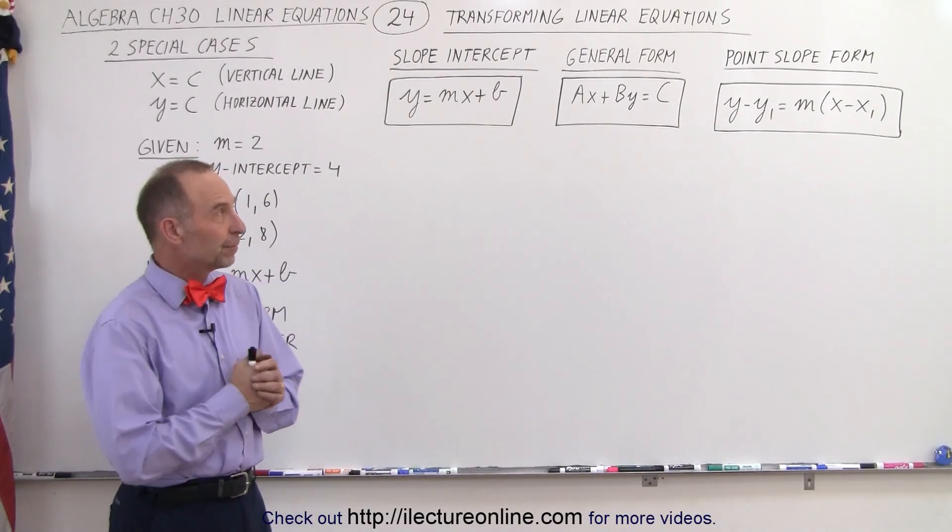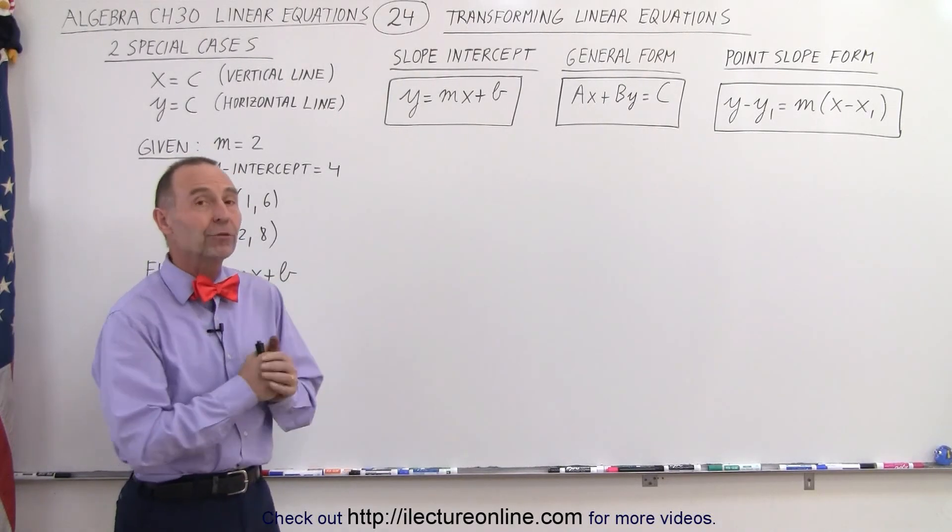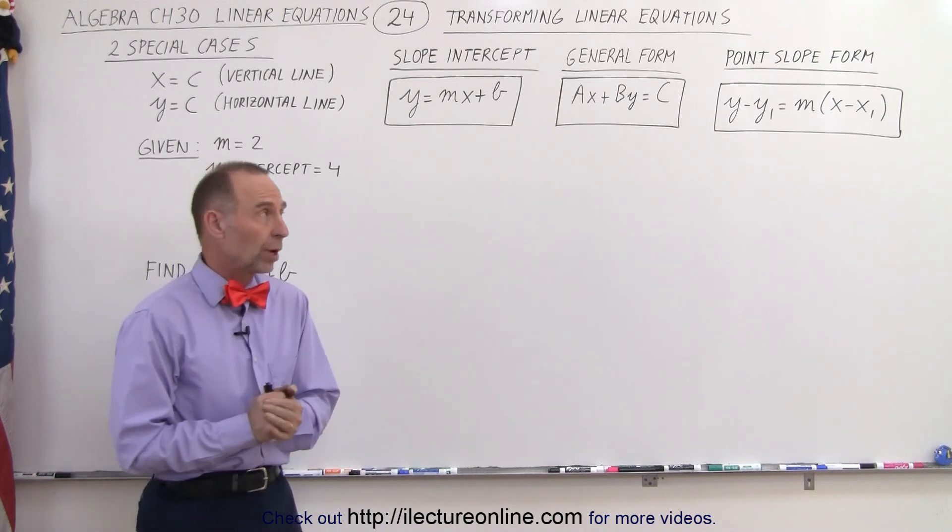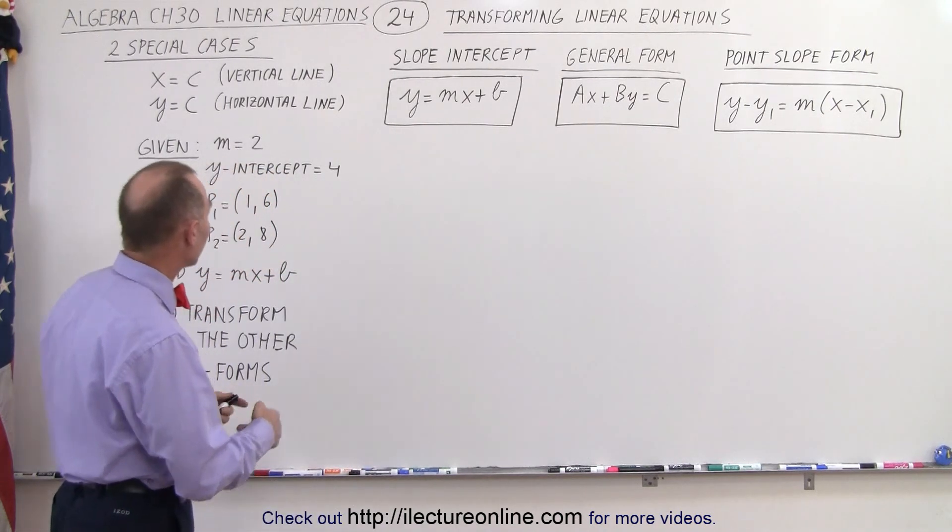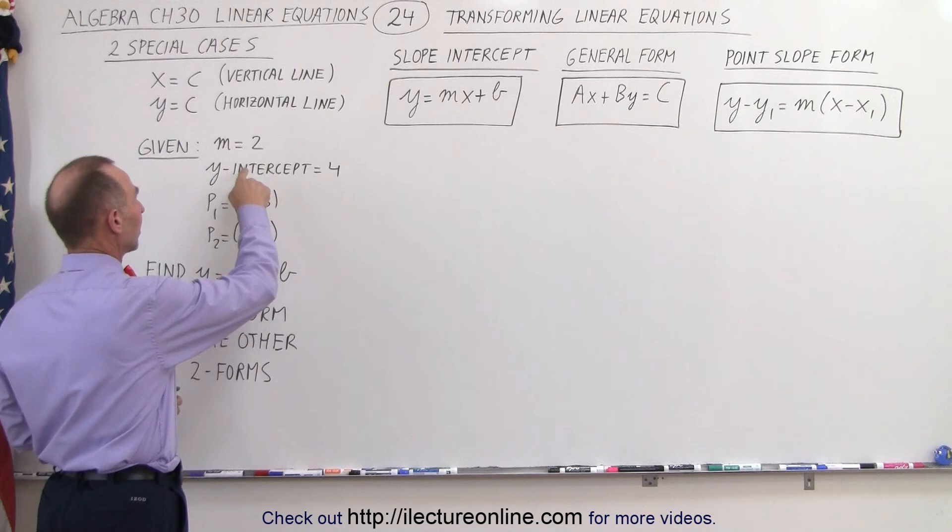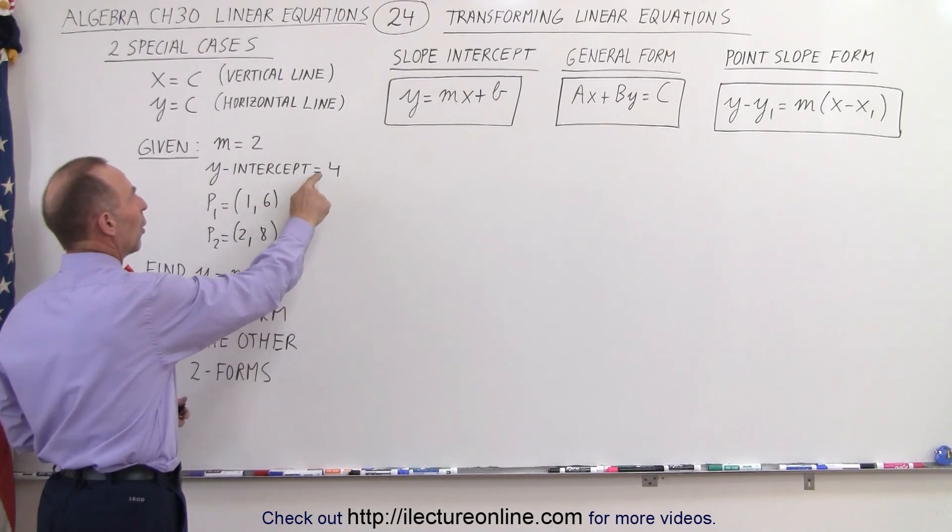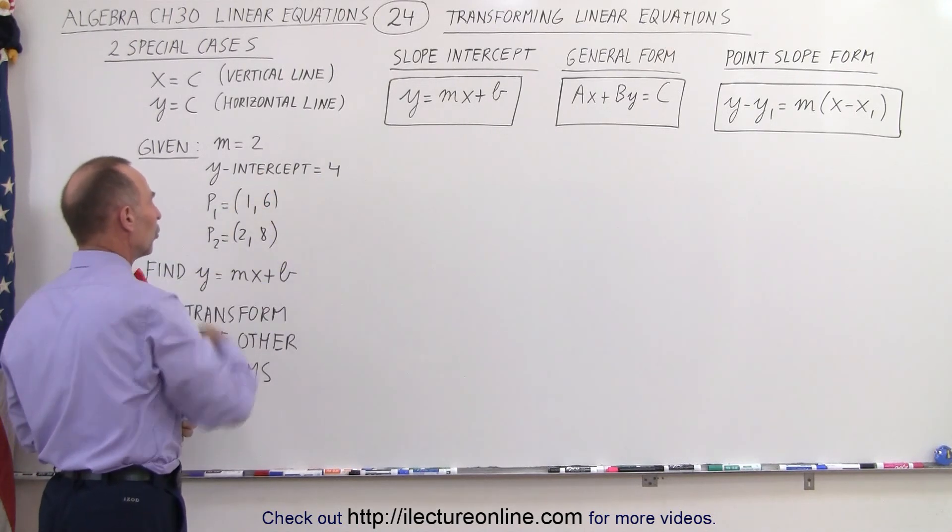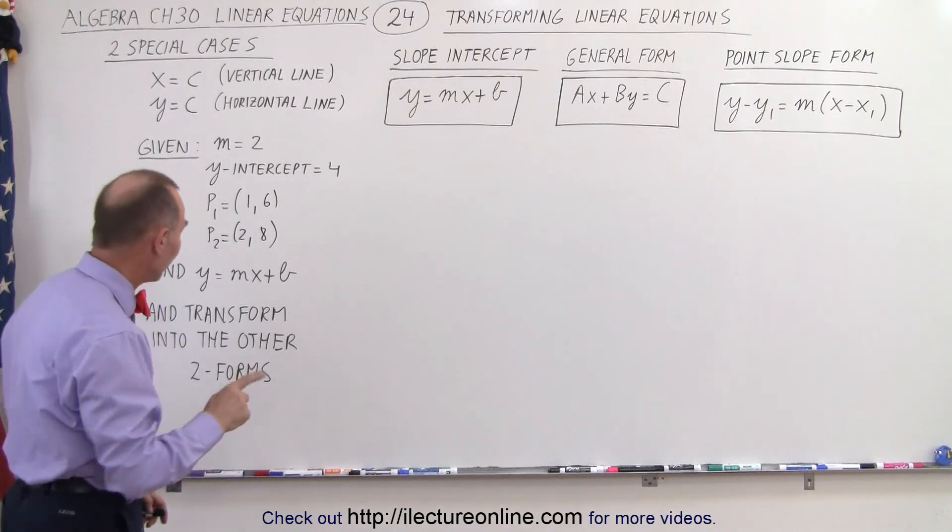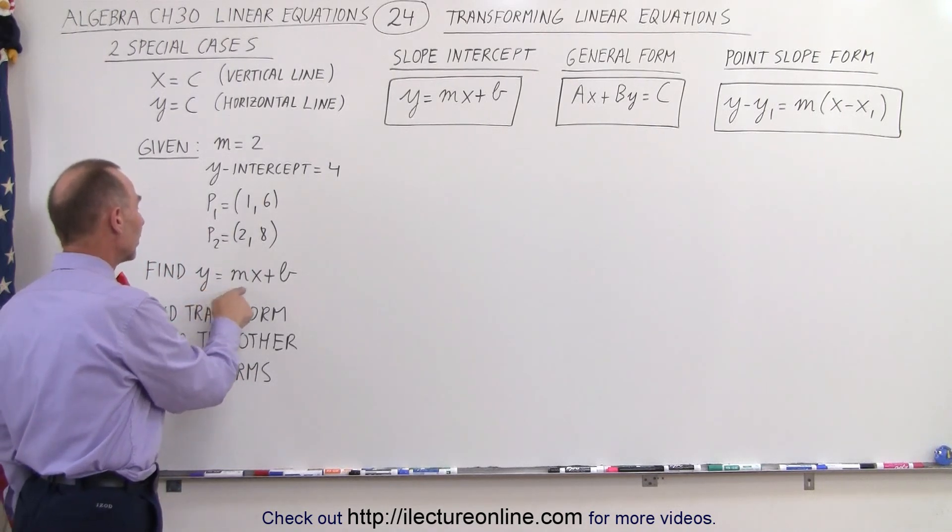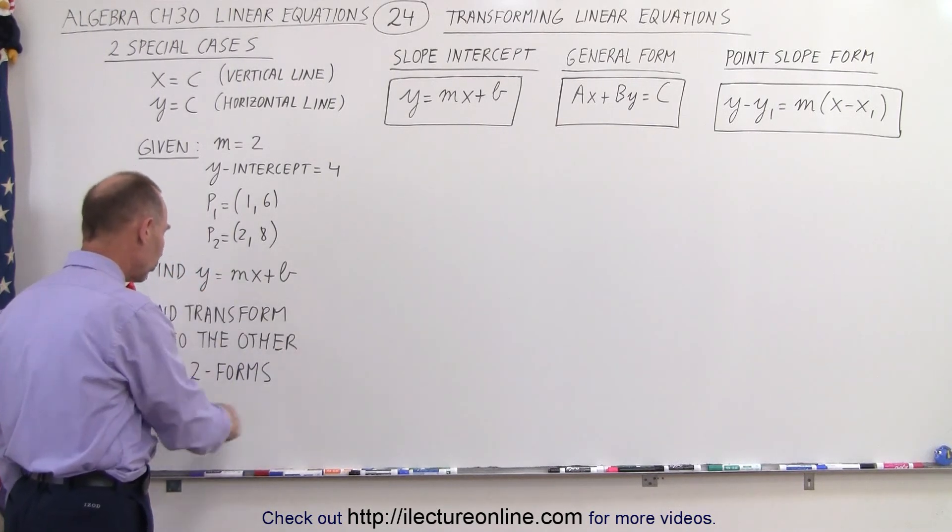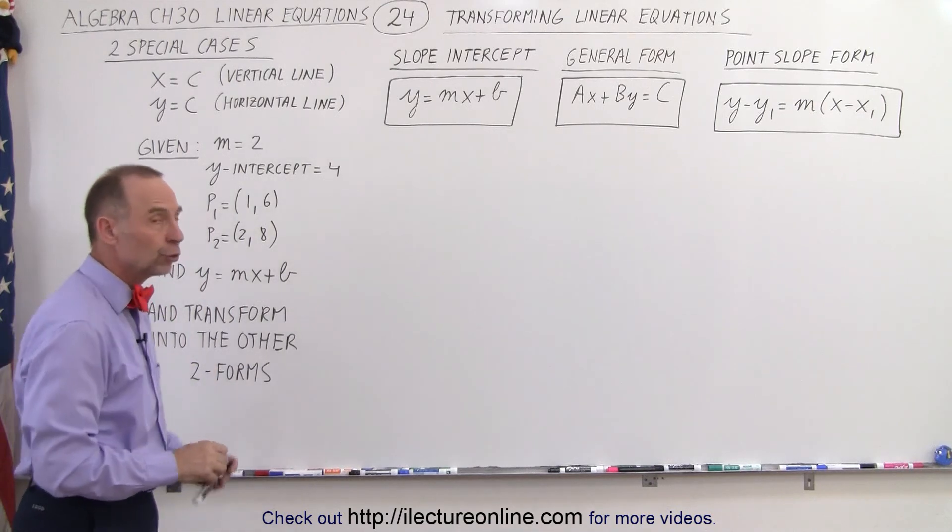Welcome to our lecture online. Now we know the format of the three different forms of a linear equation. What we're going to do now is, given the following information, that a line has a slope equal to 2, a y-intercept equal to 4, and those two points on the line, first find the equation y equals mx plus b, and then transform that equation into the other two forms.